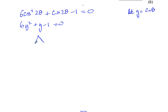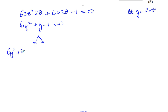We can split up the middle term into two parts. The reason I change from cos(2θ) to y is just to make it a bit more familiar and easier to deal with — we don't have to keep writing cos(2θ) every time. Be careful: y = cos(2θ), not just cos(θ). We need two numbers that multiply to give minus 6 and add to give 1. That's 3 and -2. So we get 6y² + 3y - 2y - 1 = 0.